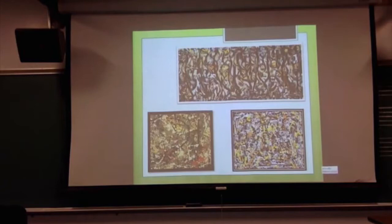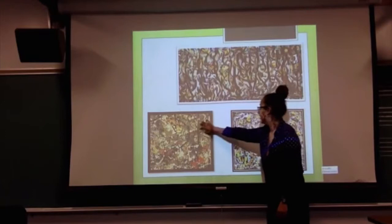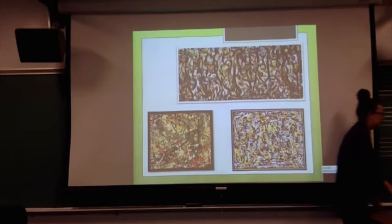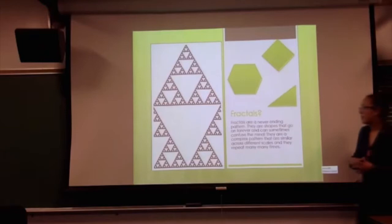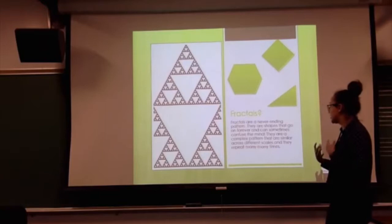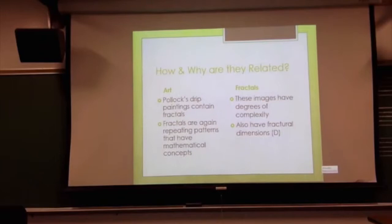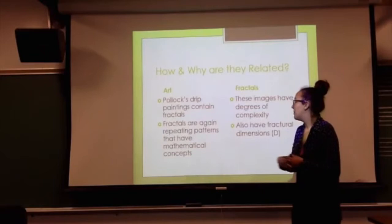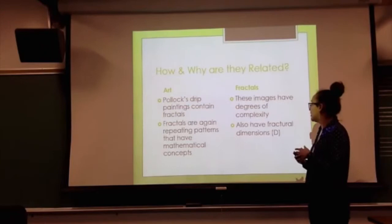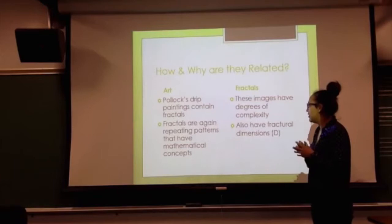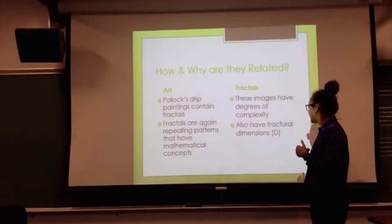Here are some of his most well-known paintings. These are three of his most famous works. Fractals are a never-ending pattern — shapes that go on forever and can sometimes confuse the mind. They are a complex pattern that are similar across different scales and they repeat many, many times. Pollock's drip paintings contain fractals, and these images have degrees of complexity. Fractals are repeating patterns that have mathematical concepts, and they also have fractal dimensions, denoted as D.